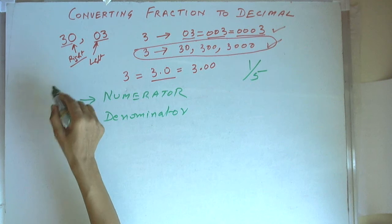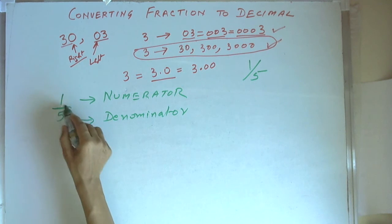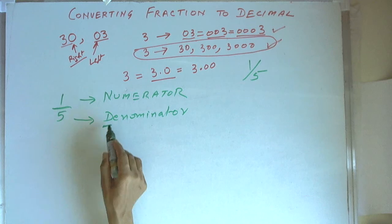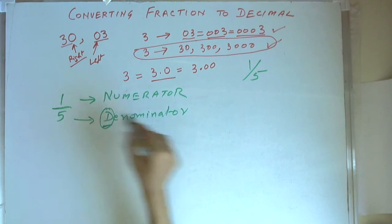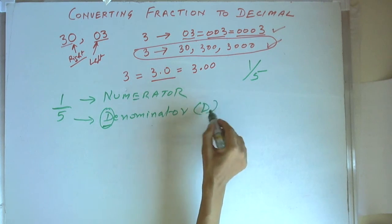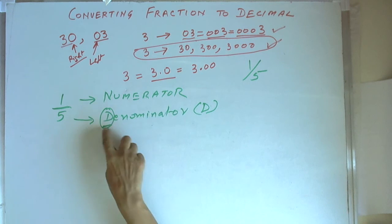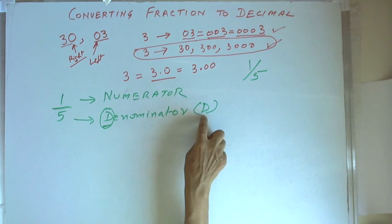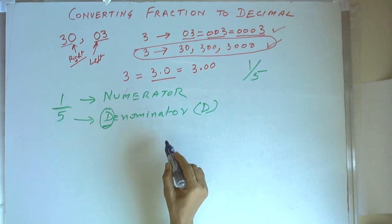The numerator is above the line and the denominator is below the line. Remember D is for down — denominator is always below. Never confuse between numerator and denominator by remembering that the word D is for down. Now, let us see how to convert the fraction 1 by 5 into decimal.